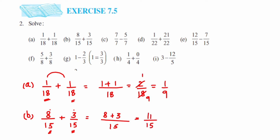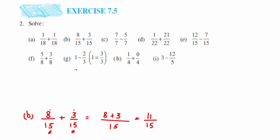Next we have problem c: 7 upon 7 minus 5 upon 7. Again, this is a like fraction because the denominators are the same. For like fractions, keep the denominator the same, which is 7. It's a subtraction, so subtract the numerators: 7 minus 5 is 2. We get 2 upon 7. We cannot reduce this further, so leave it like that.